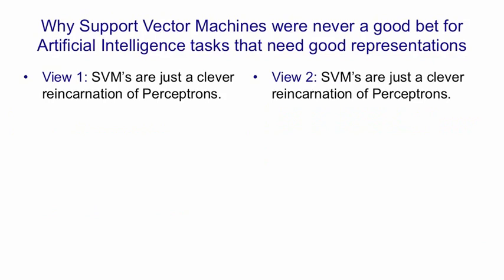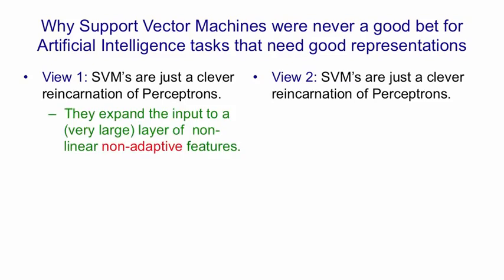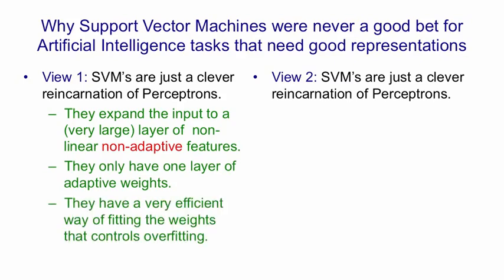I want to talk briefly about support vector machines — not how they work, but what I think their limitations are. There are several ways to view a support vector machine. According to the first view, SVMs are a reincarnation of perceptrons with a clever trick called the kernel trick. You take the inputs and expand the raw input into a very large layer of non-linear but non-adaptive features — just like perceptrons with a big feature layer that doesn't learn. Then you only learn one layer of adaptive weights, from the features to the decision unit. SVMs have a clever way of avoiding overfitting by looking for a maximum margin hyperplane in a high-dimensional space, and they can do that much more efficiently than you might expect. That's why they work well.